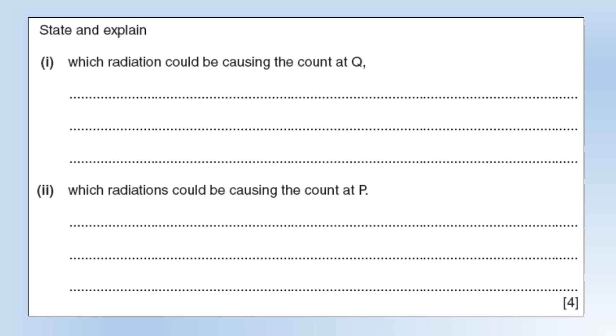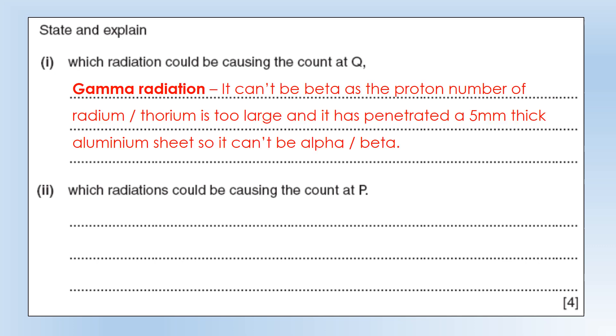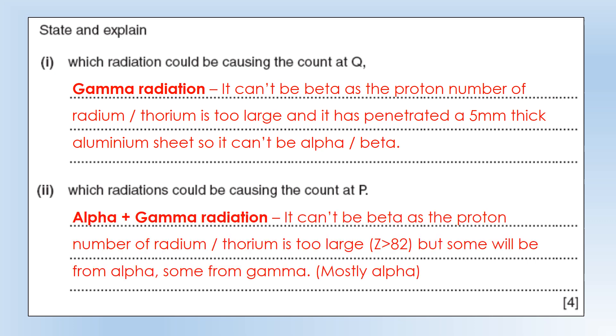Which radiation could be causing the counter Q? In my head it's gamma radiation. The reason it's not going to be beta is because both thorium and radium have a proton number greater than 82, so they're both going to be alpha emitters. In theory beta radiation could be making it through five millimeters of aluminum, at least some of it could be, but we're not producing any beta. Alpha is certainly not going to get through the aluminum. Which radiation could be causing the counter P? Theoretically 1.5 centimeters air we could have alpha, beta or gamma, but I don't think it's gonna be beta. At that distance from the source it's gonna be mostly alpha because alpha is the most ionizing, so most of them are going to be from alpha radiation.